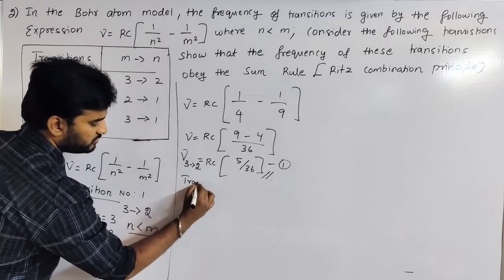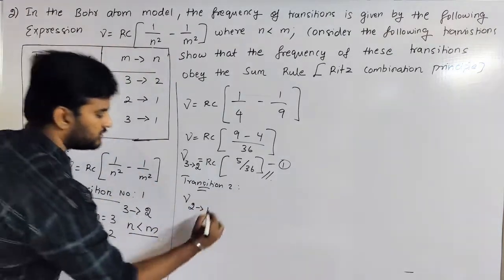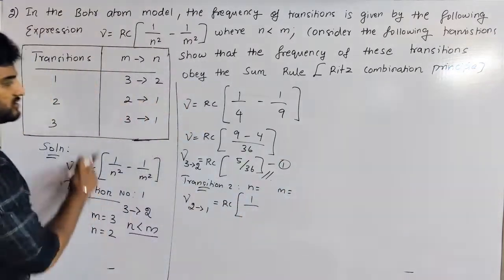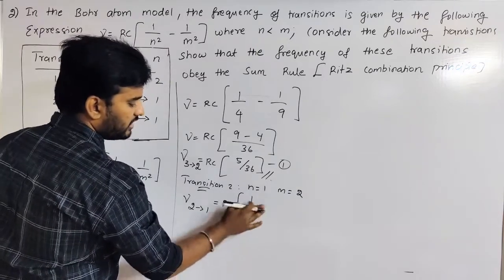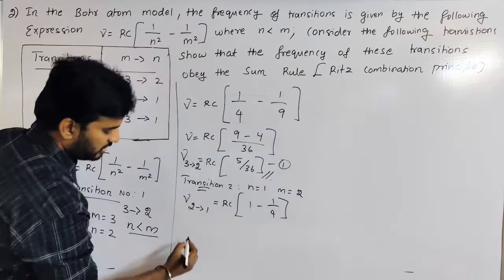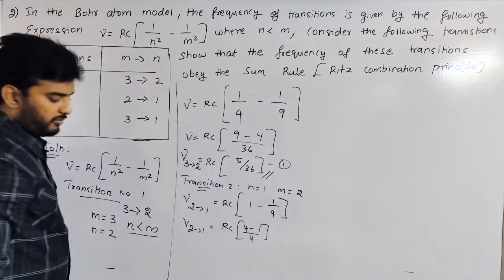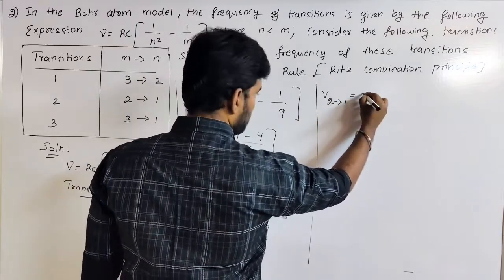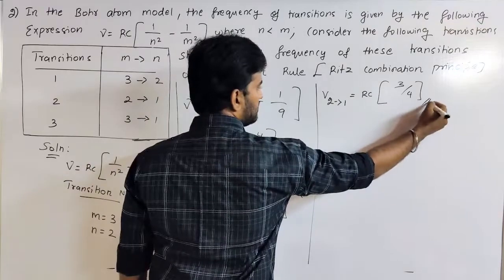Transition number 2: nu for 2 tends to 1. Here m equals 2 and n equals 1. So nu equals RC times (1/1 squared minus 1/2 squared) equals RC times (1 minus 1/4) equals RC times (4 minus 1)/4 equals RC times 3/4. This is the second equation.